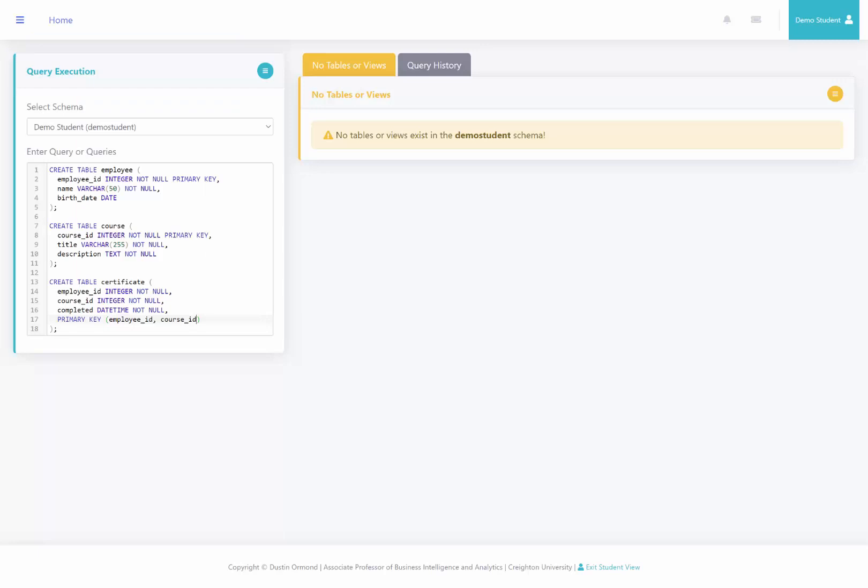So for our primary key, foreign key pairs, we don't have anything in employee or course, but certificate references both employee and course. So I'm going to go ahead and add two new constraints. The first constraint, I will name certificate foreign key one. And the type of constraint that this is, is a foreign key.